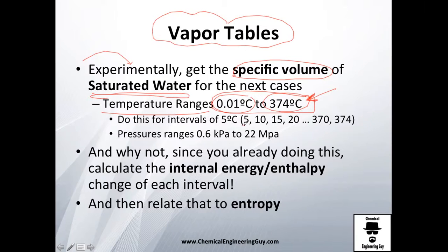Not only that — do this for every interval of 5 Celsius. So you will have 0.01°C, 5°C, 10°C, 15°C, 20°C... until you get to 370 and finally 374. So literally you will do one experiment, two experiments, three experiments, four experiments — a lot of experiments.